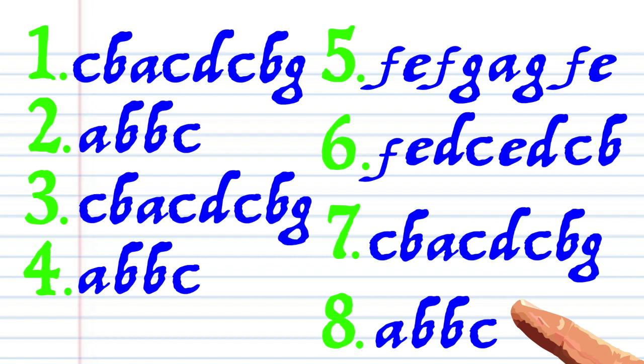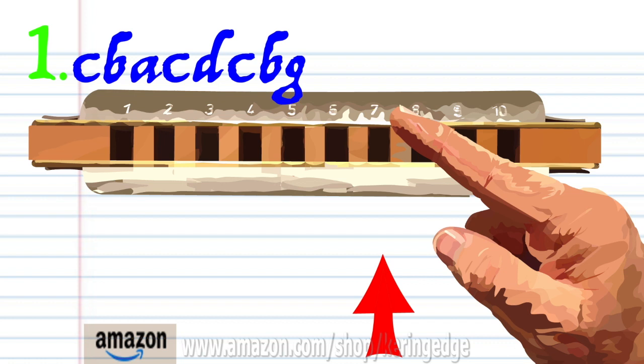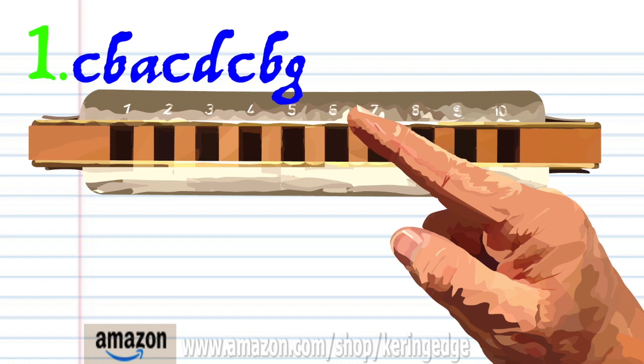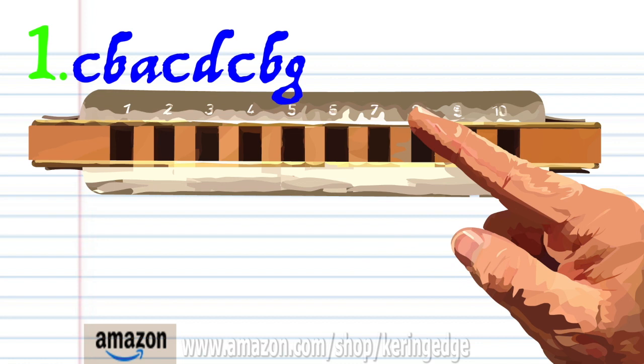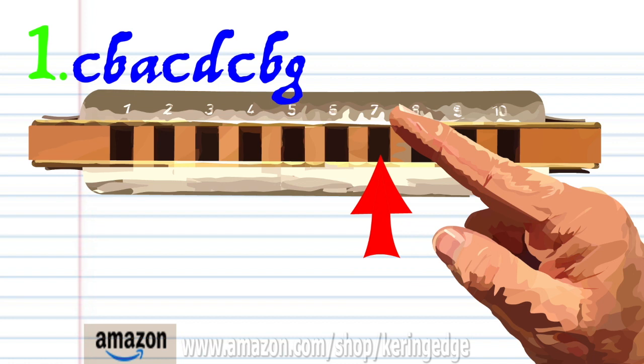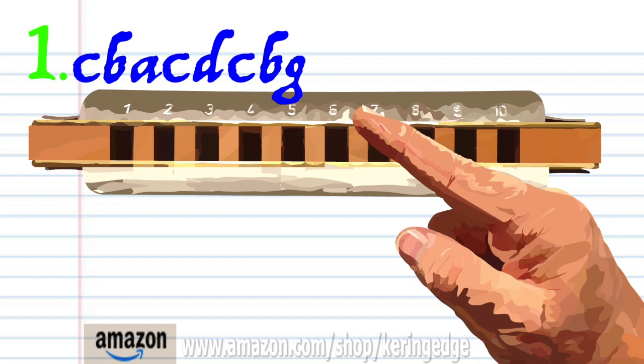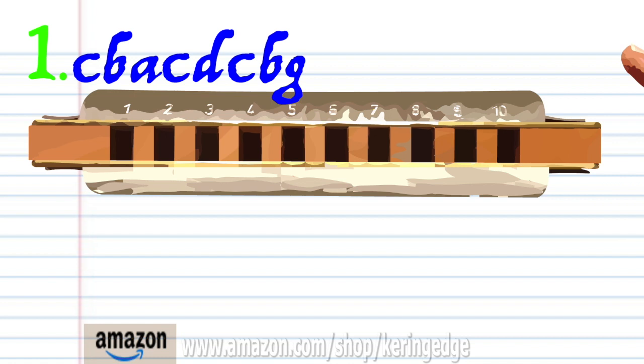Let's take a closer look at phrase one. Blow into seven, breathe in through seven, breathe in through six, blow into seven, breathe in through eight, blow into seven, breathe in through seven, and blow into six. Practice this until you end up with something that sounds like this.